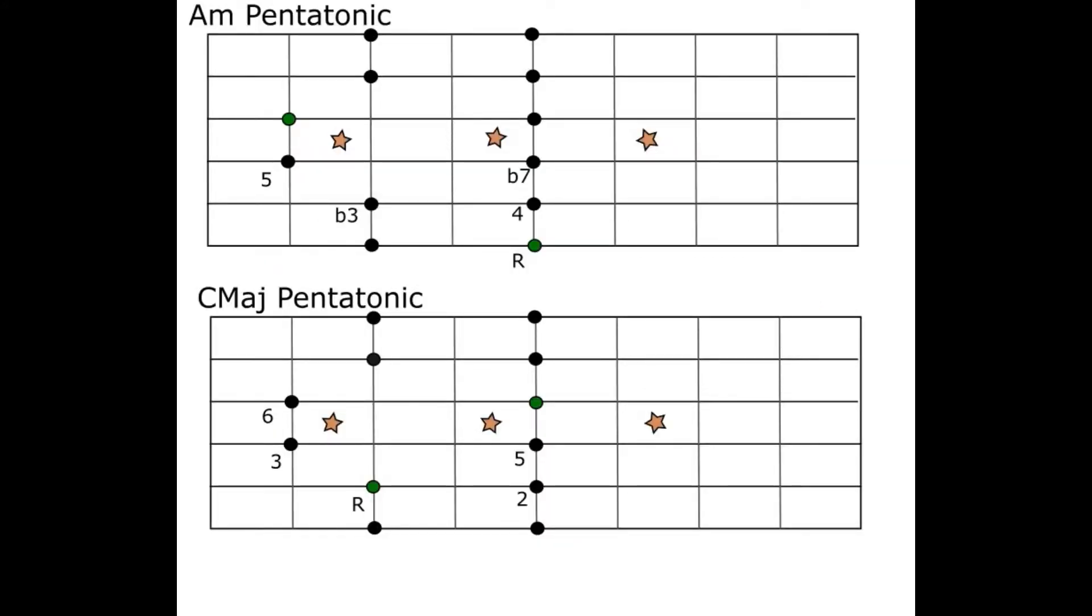Okay so here we are looking at pentatonic pattern five centered around the third fret. So again that just means that the lowest tone in the scale pattern is the G string here or the G note on the low E at the third fret.